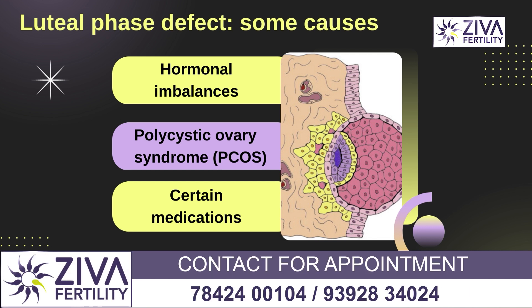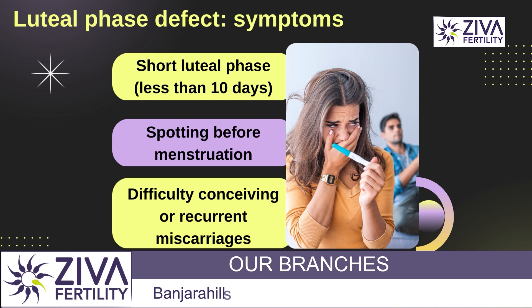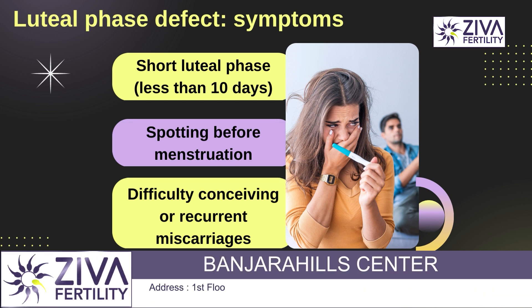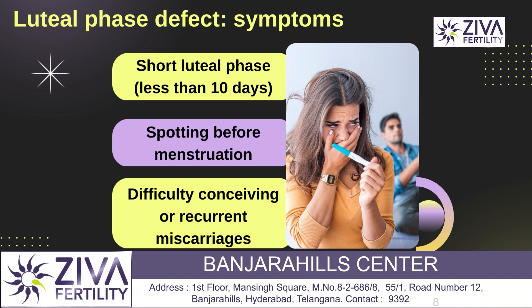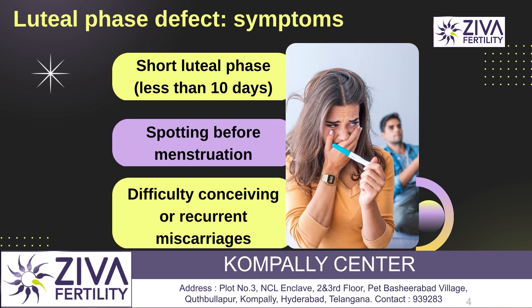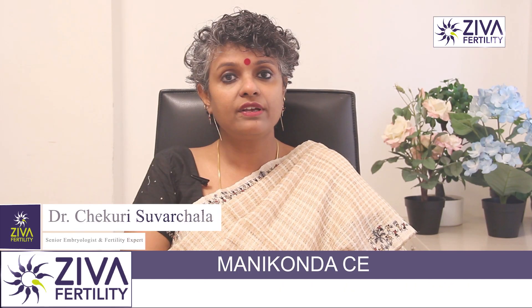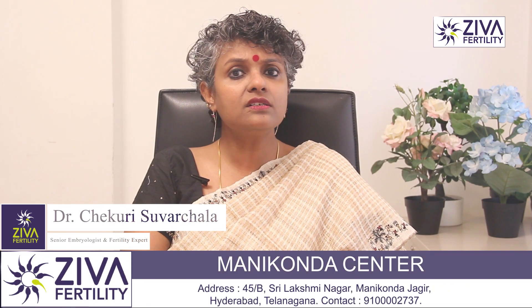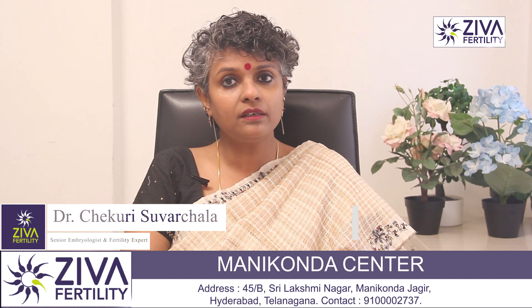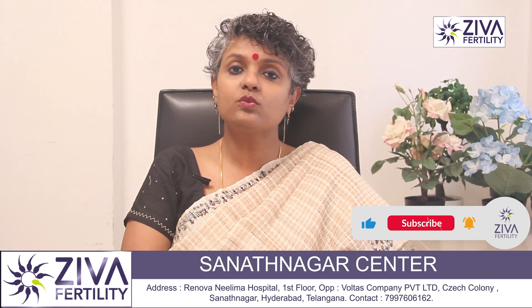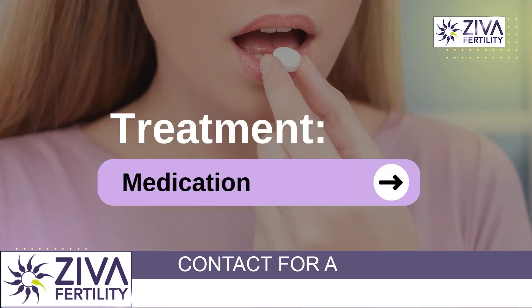Symptoms of luteal phase defect could include a short luteal phase — that is, less than 10 days — spotting before menstruation, difficulty in conceiving, or recurrent miscarriages.